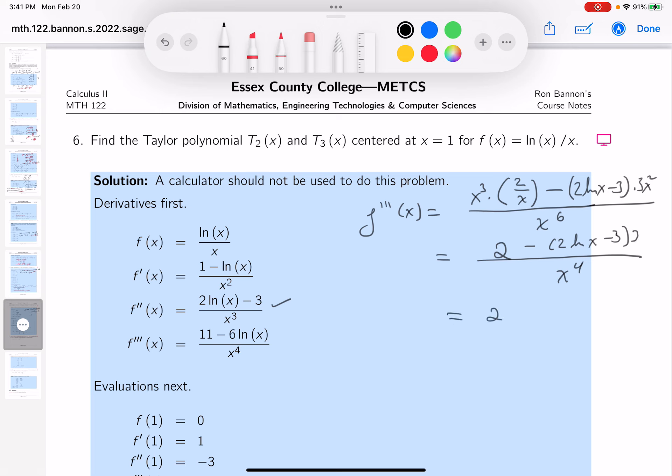This is going to be minus 2 ln x minus 3. And then you get 3 on the outside. You're going to get 2 minus 6 ln x plus 9 over x to the 4, which gives me 11. 9 plus 2 is 11. Minus 6 ln x over x to the 4. I'm seeing that over there. All right?